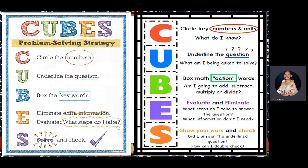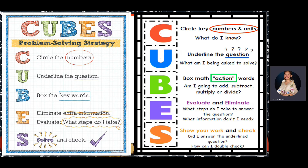Before we solve the story problems in the next slide, let's have a short review about the problem solving strategy — we call it CUBES. C is for circle the numbers: after you read the problem and understand it, you have to find out what are the given, so those are the numbers in the problem. U is underline the question — the part of the sentence that has a question mark, like 'how many kilograms are there' or 'how many apples in each basket.' So, what am I being asked to solve? That's the question.